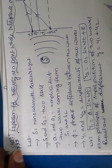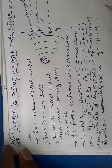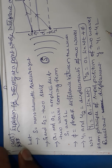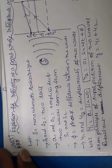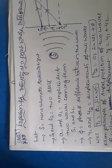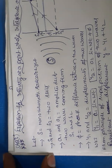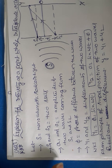Hi students, welcome to our physics class. In this class we are going to learn about the derivation of expression for the intensity at a point where interference occurs. This is a topic in wave optics chapter in intermediate second year physics — a four-mark most important question. In the material you can find this as short answer question number three: expression for the intensity at a point where interference occurs.